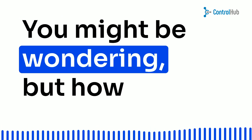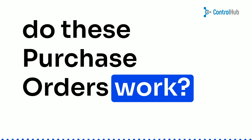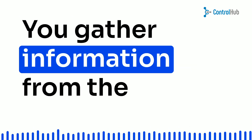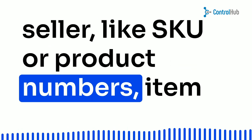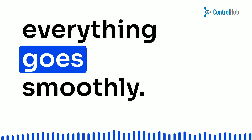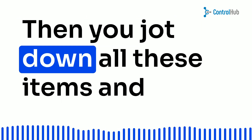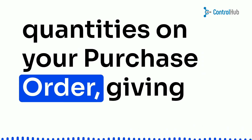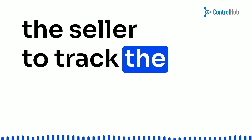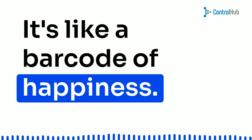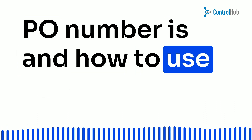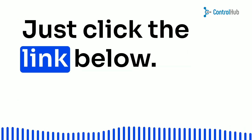You might be wondering: how do purchase orders work? Well, imagine you're on a quest to find the perfect item. You gather information from the seller like SKU or product numbers, item descriptions, and all those little details. You even set a delivery date to make sure everything goes smoothly. Then you jot down all these items and quantities on your purchase order, giving it a unique identifying number. This number allows both you and the seller to track the fulfillment of your purchase — it's like a barcode of happiness. If you're curious about what a PO number is and how to use it, just click the link below.